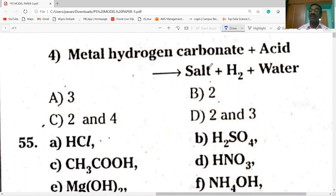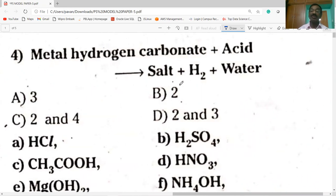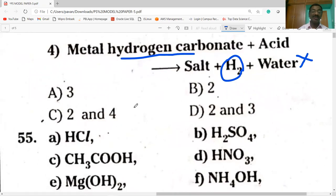Next, metal hydrogen carbonate plus acid gives salt plus H2 plus water. Here metal hydrogen carbonates like sodium bicarbonate plus acid gives salt, carbon dioxide, not H2. It is also wrong statement. So statements 2 and 4 are wrong.